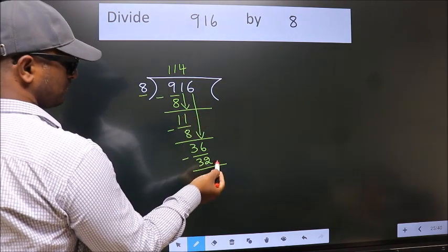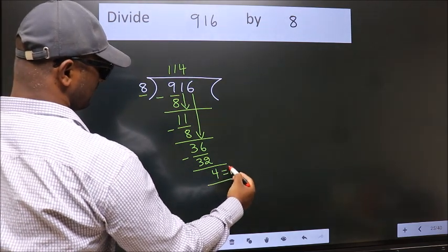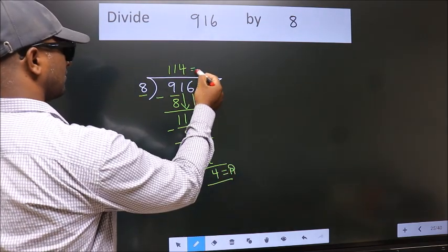No more numbers to bring down. So we stop here. This is our remainder. This is our quotient.